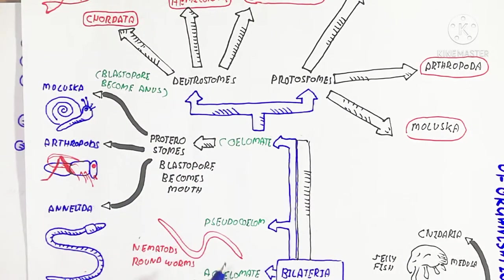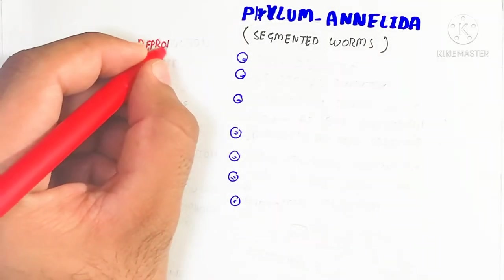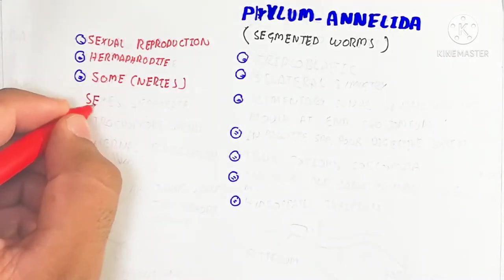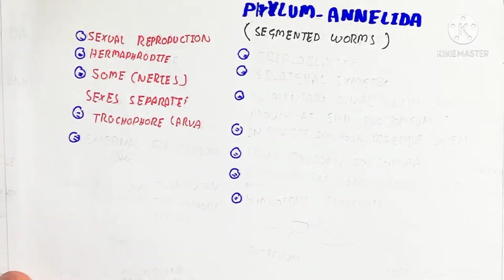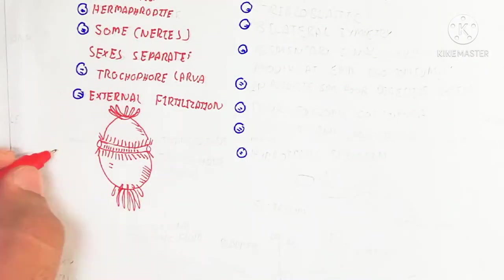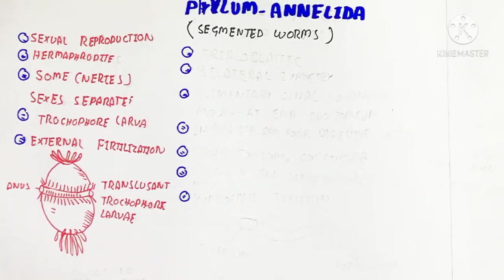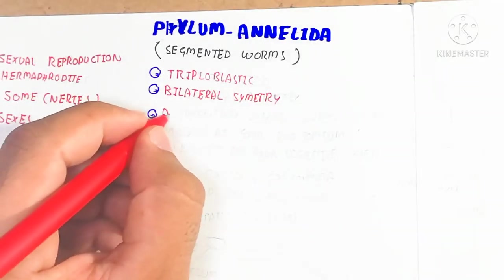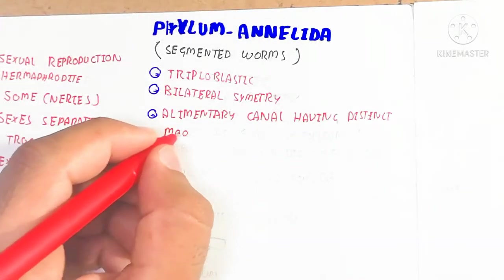Moving on from pseudocoelomates, we now discuss the coelomates. The coelom is present in phylum Annelida, phylum Mollusca, and phylum Arthropoda. Phylum Annelida is also known as segmented worms — they are metamerically segmented. They reproduce sexually and some are hermaphrodite, while in some species sexes are separate. A trochophore larva is present, and external fertilization occurs.